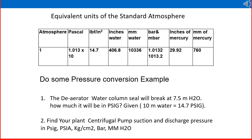Do some pressure conversion examples. Here is a question: a deaerator is used to remove dissolved oxygen from water before it enters the boiler feed water. The deaerator water column is a vertical vessel for removal of dissolved oxygen. Its water column seal breaks at 7.5 meters of water. Given that 10 millimeters of water equals 14.7 psig, find out the answer in psig.